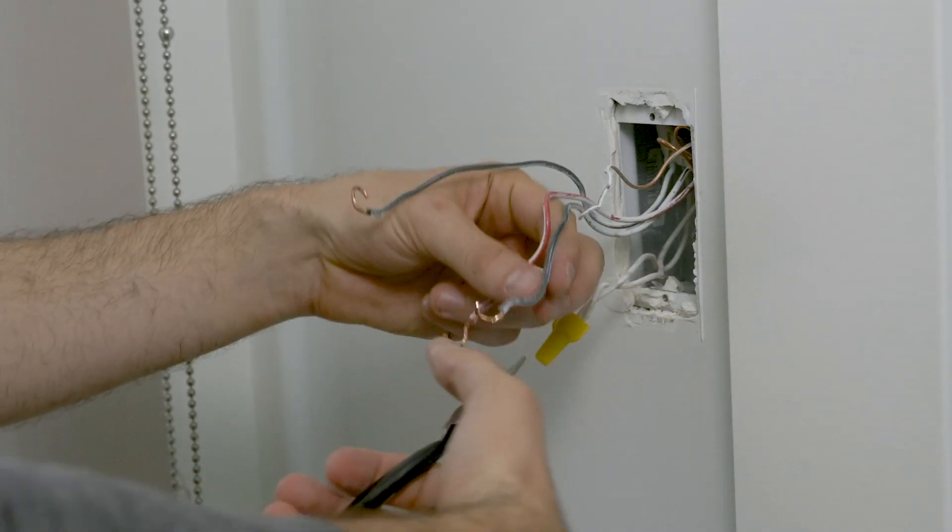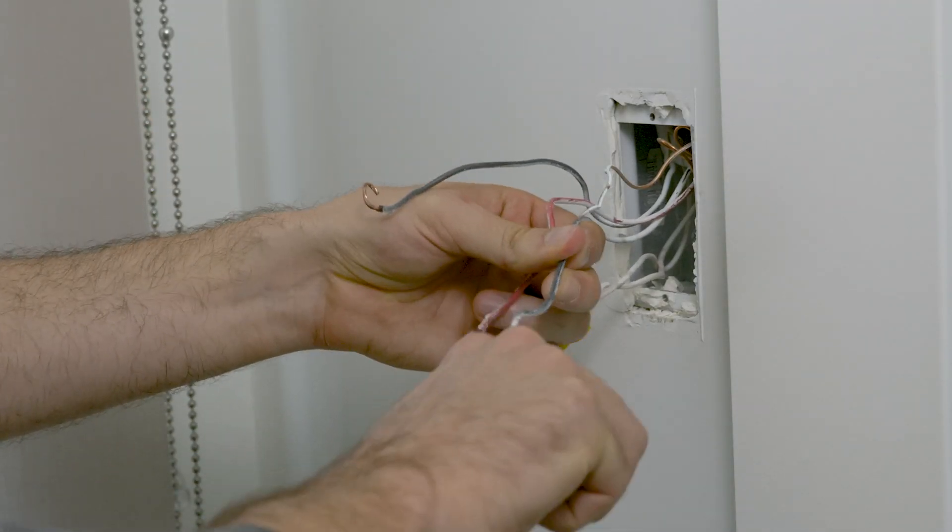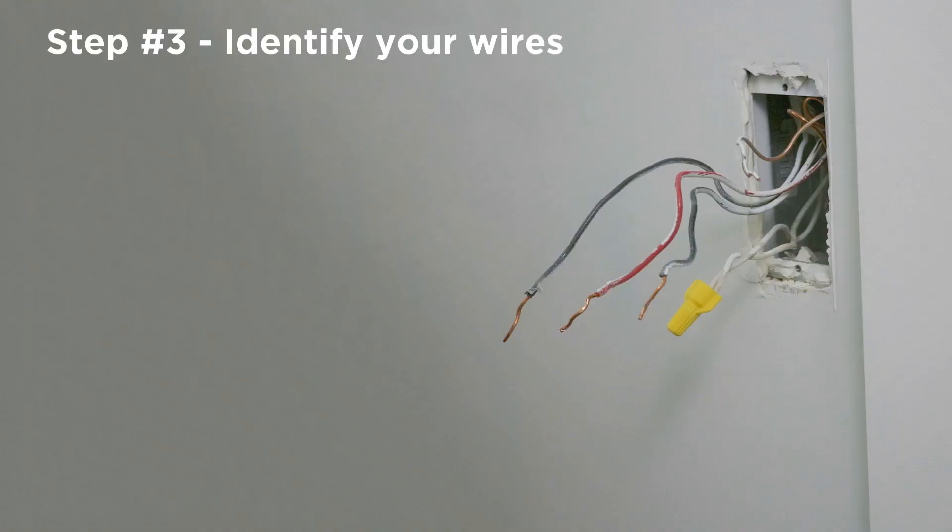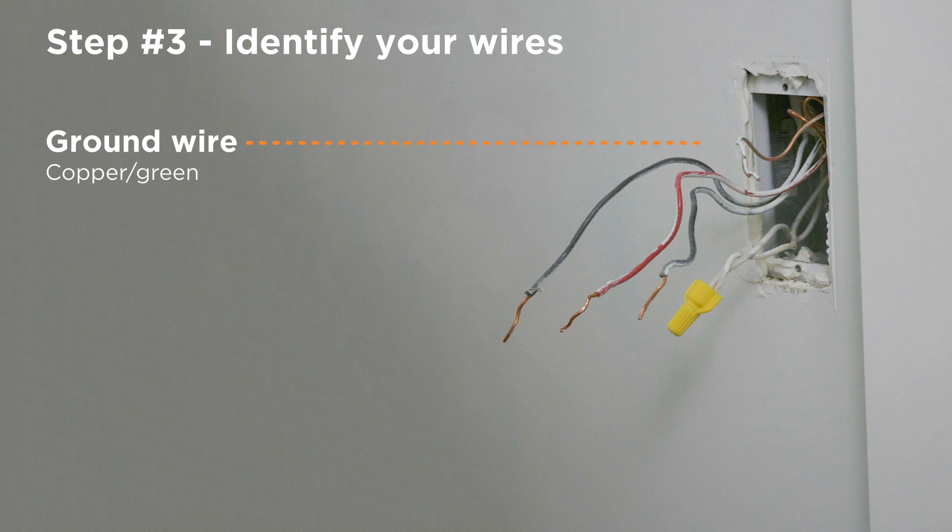Straighten the wire ends with your needle-nose pliers. Now that I have access to all the wires, I will identify which wires are which. I have ground, which is a bare copper wire, sometimes covered in green shielding.